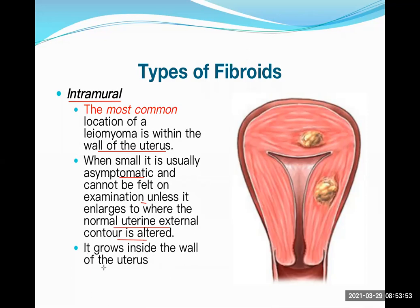An intramural fibroid grows inside the wall of the uterus and can block the opening of the fallopian tubes — a significant problem. If present in the cervical area, it may even obstruct the ureter or sometimes even the uterine artery.